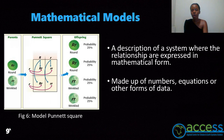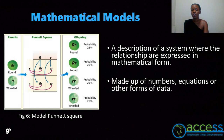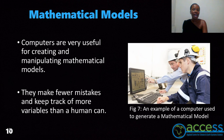The mathematical model is a description of a system where the relationships are expressed in mathematical form. They can be made up of numbers, equations, or other forms of data. For instance, in figure six we have a Punnett square, which explains how genes are passed from parents to offspring. It is represented in a probability format — a mathematical format — where, for instance, an offspring that is round has a 25% probability of being round, as shown in the diagram.